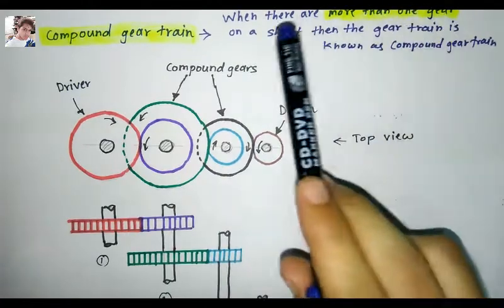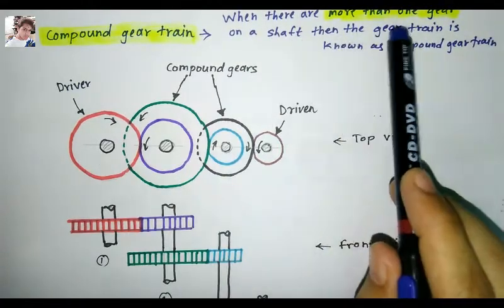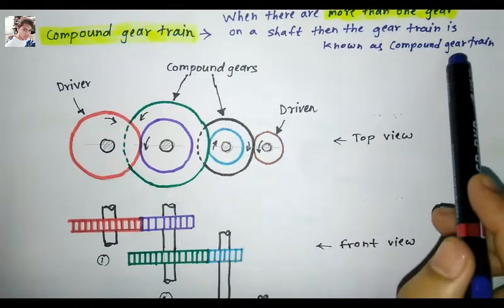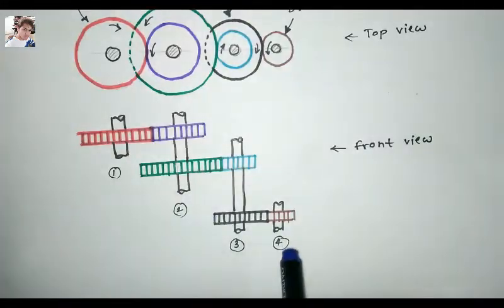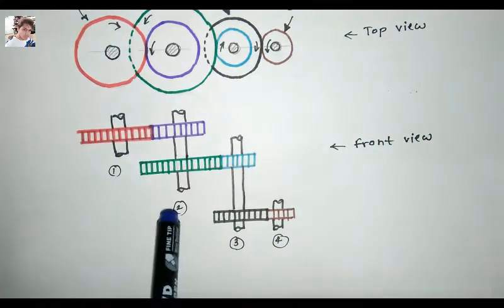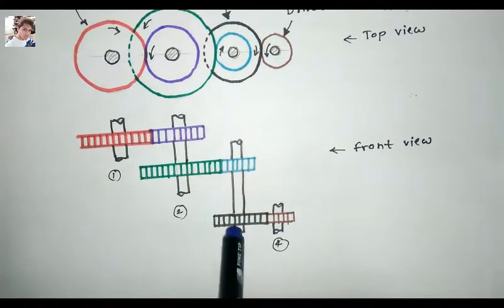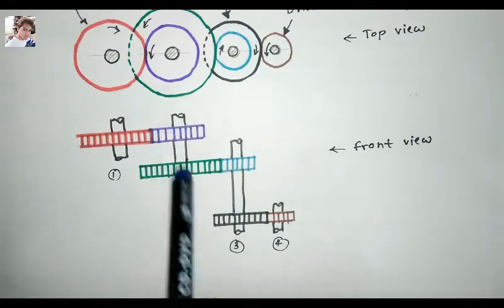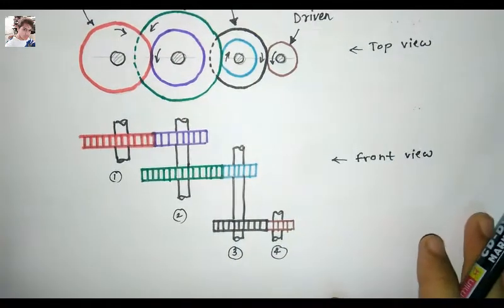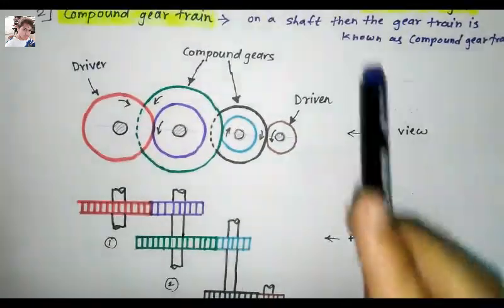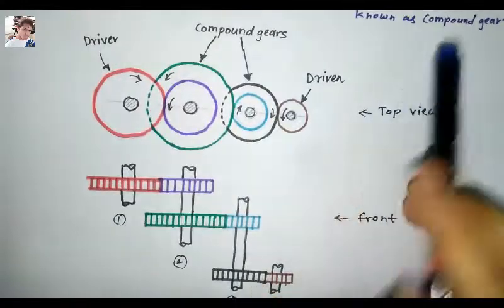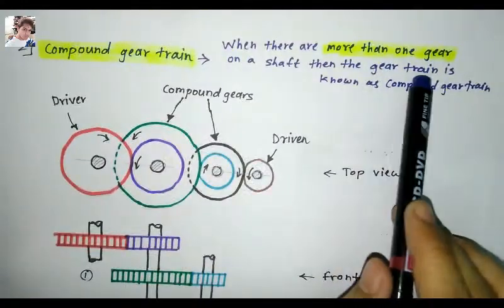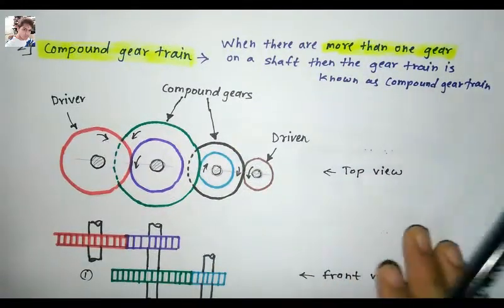The second type is a compound gear train. This is the arrangement when there are more than one gear on a shaft. Here shaft number one and shaft number four contain only one gear, but shaft number two and shaft number three contain more than one gear. When there is more than one gear on a shaft, the gear train is known as a compound gear train.